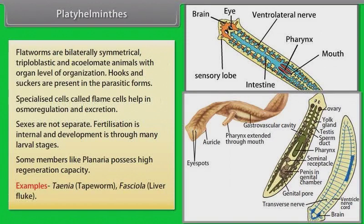Examples: Taenia, that is tapeworm; Fasciola, that is liver fluke.